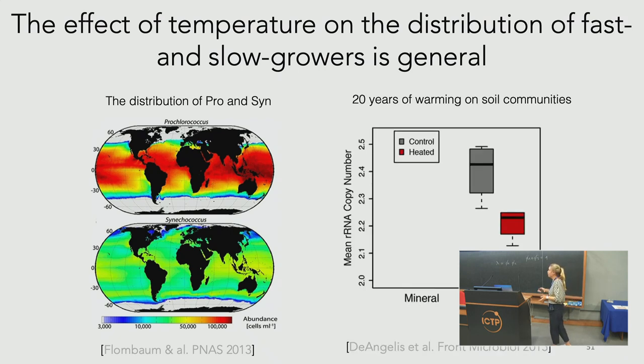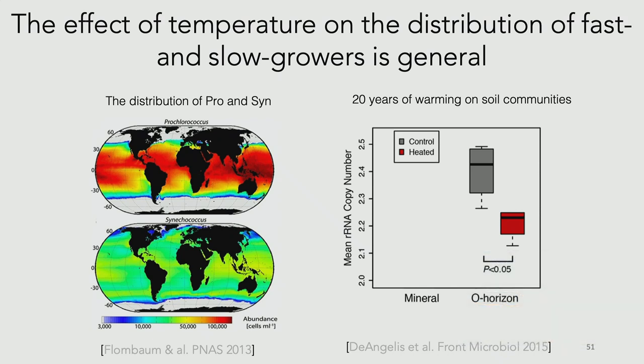Moving to soil environments, at the Harvard Forest, researchers heated plots of soil and measured community composition over 20 years of warming. The mean copy number decreases over the course of the years in warmed plots, consistent with the prediction across yet another environment.